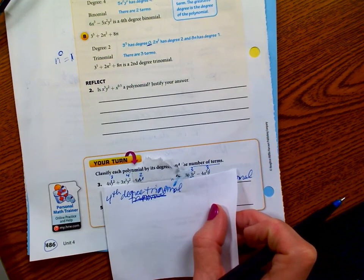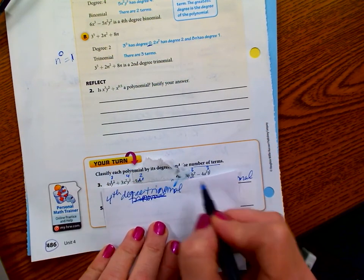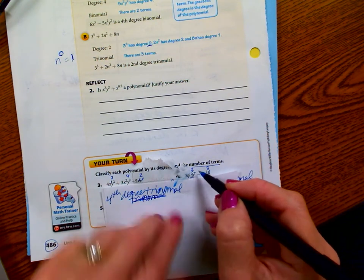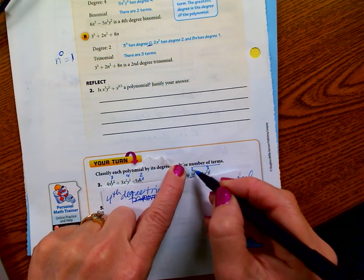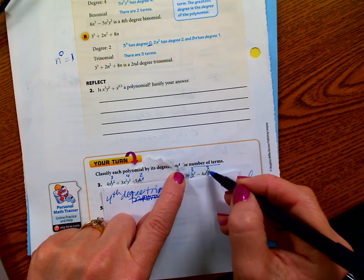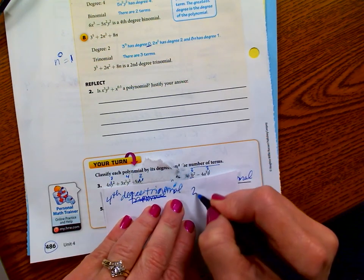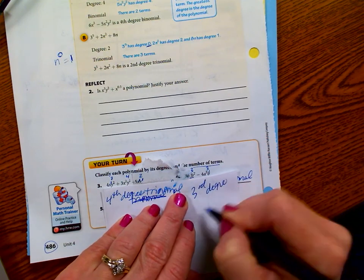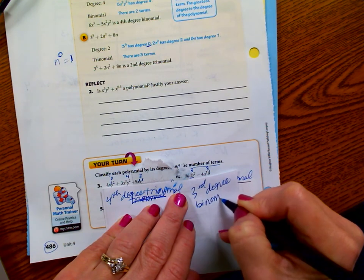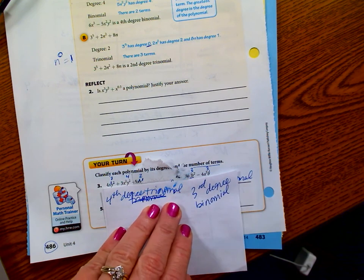We have A, B squared. First of all, how many terms? Two terms. So it's binomial. We have 8A to B squared, which is going to be three. A squared B to the first, which is three. So it is a third degree binomial. So a third degree binomial.